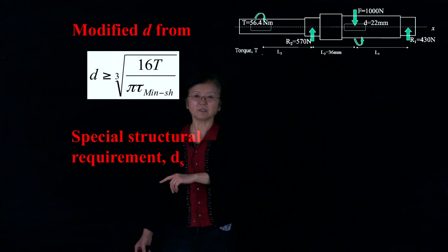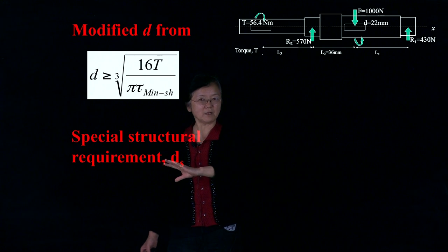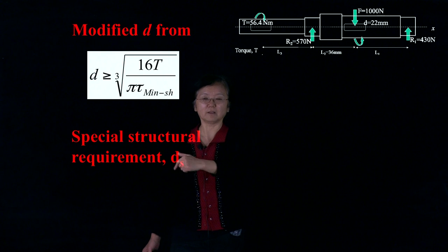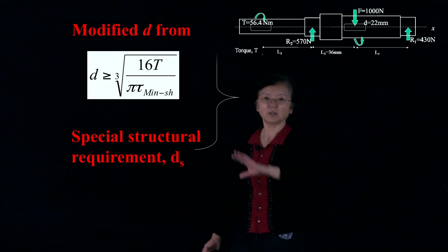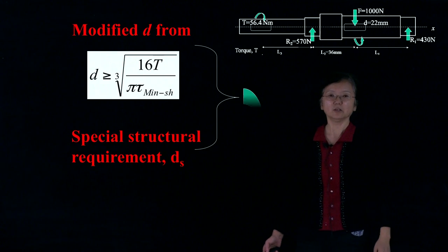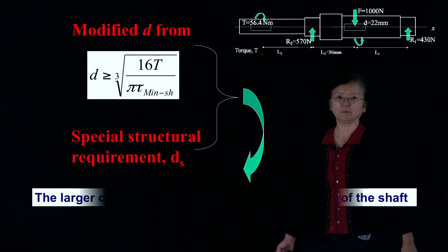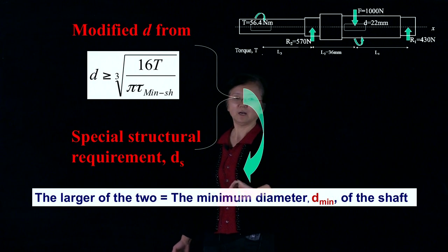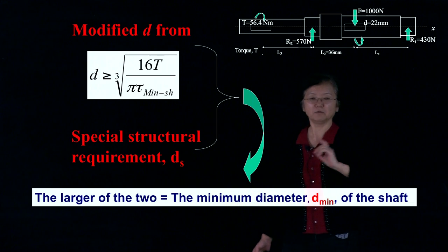One is our modified minimum diameter from calculation, which considers the keyway effect and the round-off to the integers. And then we have to consider there might be a special structure requirement, which I call that d_s. So compare those two, choose the larger one.